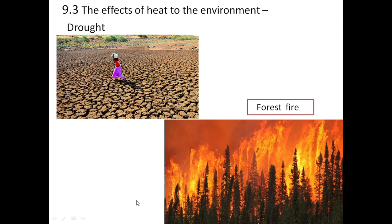Now let's discuss the effects of heat on the environment: drought and forest fires. During drought, tanks dry out, water levels in wells go down, the land gets severely dry, and the whole environment is covered with dust. Forest fires may also occur due to severe heat, and they spread very easily as the trees are dry.